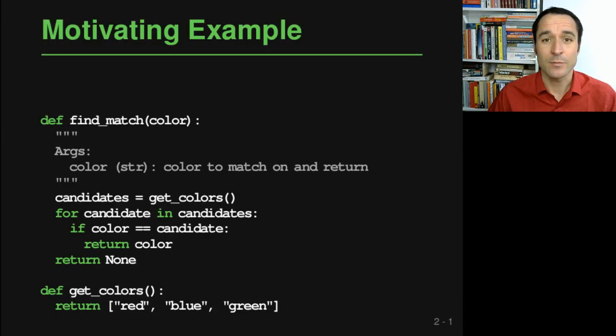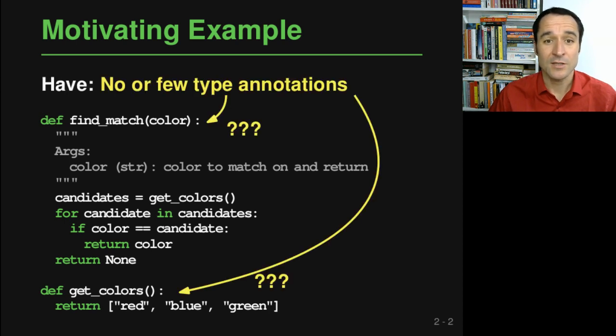As a motivating example, consider a piece of Python code. Nowadays there's a lot of Python code out there. It doesn't really matter what this code is doing, but the important bit here is that this code does not have any type annotations, and some other code may have just a few type annotations.